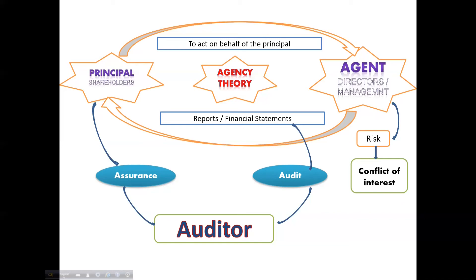For example, the auditor might say that yes, the financial statements give a true and fair view — meaning the reports do not contain material misstatements. Or the auditor may say there are some major mistakes in the reports and it is not giving a true and fair view. In either case, the auditor is giving some assurance to the principal, through which the principal can make proper economic or business decisions to run the business.